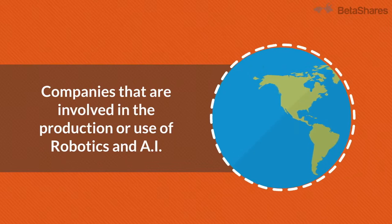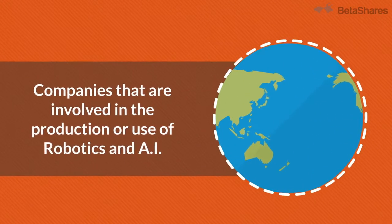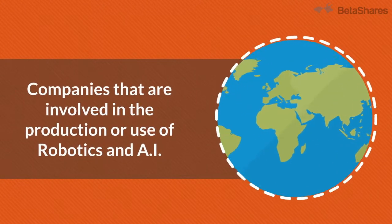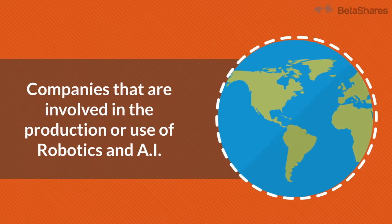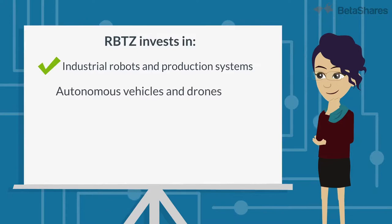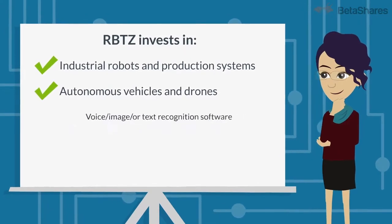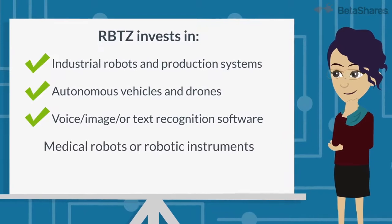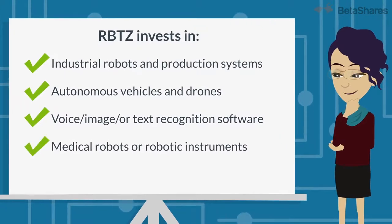RBTZ invests in companies around the globe that are involved in the production or use of robotics and automation products and services. Examples include industrial robots and production systems, unmanned vehicles or drones, voice, image, or text recognition software, and medical robots or robotic instruments.